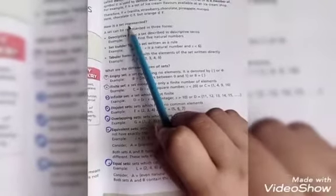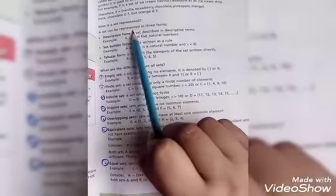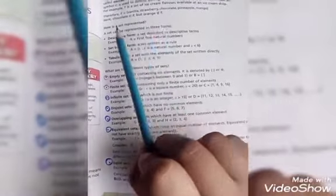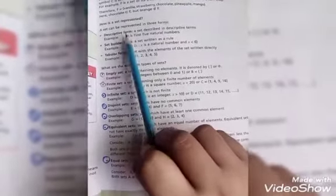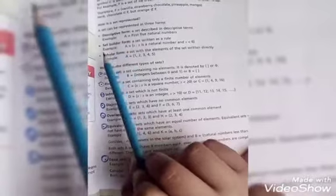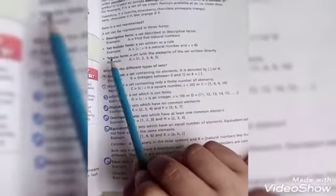How is a set represented? Sets can be represented in three forms: first, descriptive form; second, set builder form; and third and last is tabular form.